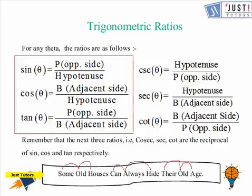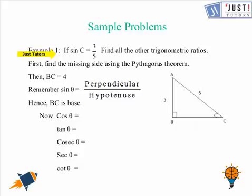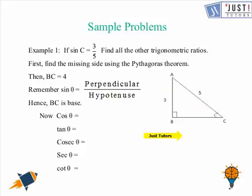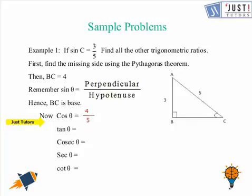Now let's move on and try some sample problems. Question number 1 says: if sine C is equal to 3 over 5, find all the other trigonometric ratios. We know that sine equals perpendicular upon hypotenuse. So if C is the reference angle, the opposite side AB is 3 and hypotenuse AC is 5. With the help of Pythagoras theorem, we can work out the base BC which is 4. So cos theta equals B upon H, which is 4 over 5. For tan theta, it is P over B, so that is 3 over 4.